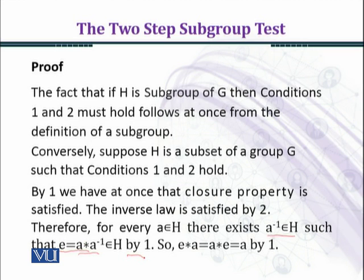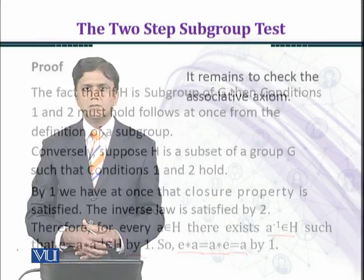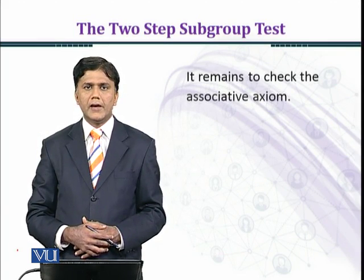From condition two we know that if a belongs to H then a inverse belongs to H, and so we have seen that the identity element belongs to H. We now prove the identity law: by the closure property, E star a equals a, which equals a star E.